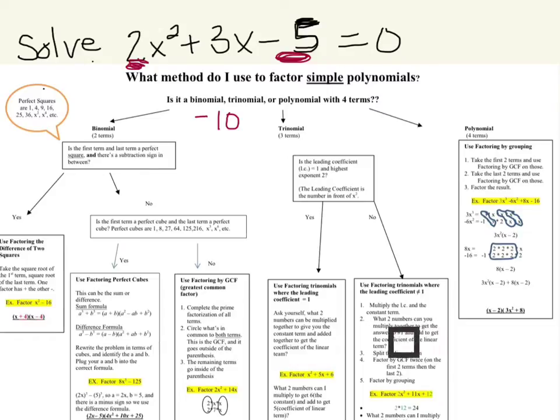But when we add them together we get the coefficient of the linear term. So two numbers that we multiply together to get negative 10, but we add them together to get 3.